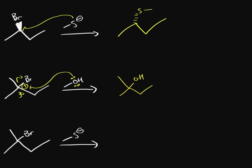What about this third reaction? We have a tertiary carbon but also a strong nucleophile. So which is it — SN2 because of the strong nucleophile, or SN1 because of the tertiary halide? Let's see if SN2 is even possible. If we tried SN2, the sulfur would have to do a backside attack on this carbon, but there are three carbon groups next to it. There's too much steric hindrance, so SN2 won't happen.